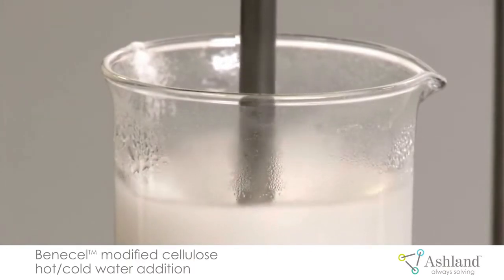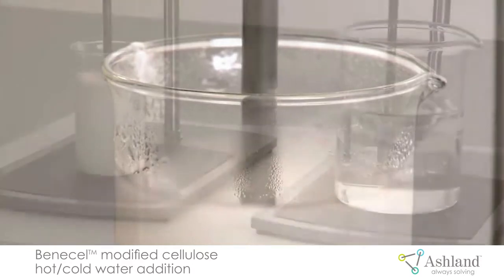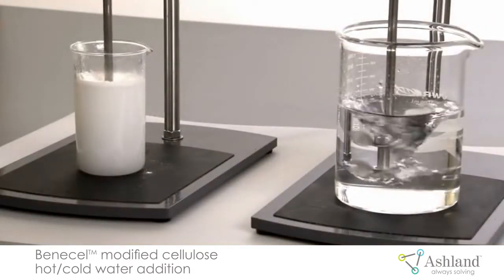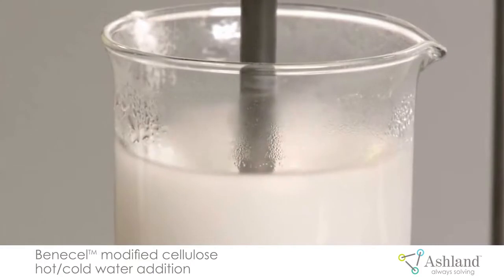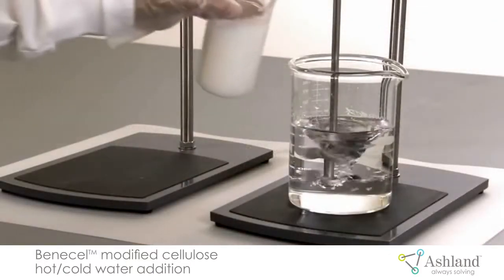We can increase the speed of the mixer to pull in the powder and disperse it completely. All we are doing is dispersing the powder in the hot water so that it will not lump. The hydration will happen when we cool the solution down.